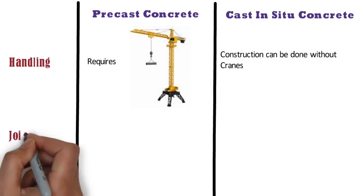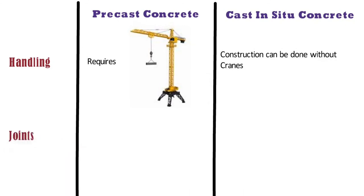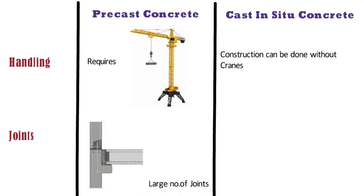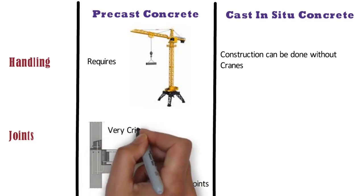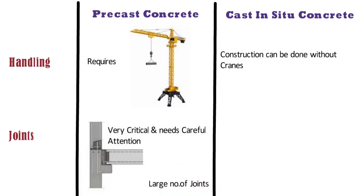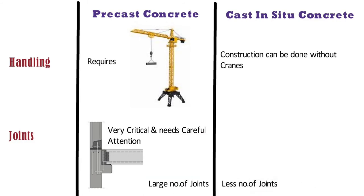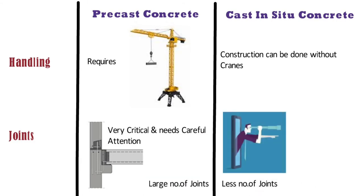In case of precast concrete, there are a large number of joints in the structural system. Details at the joint become very critical and need careful attention. Whereas in case of cast in situ concrete, less number of joints will be present in the structural system, and no serious attention is required for joints.